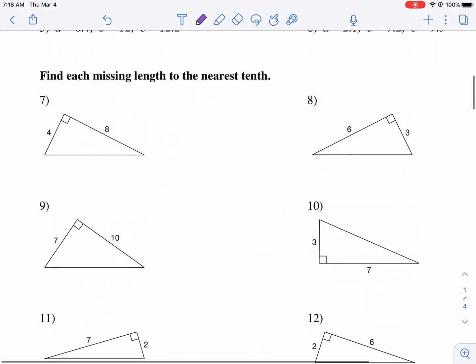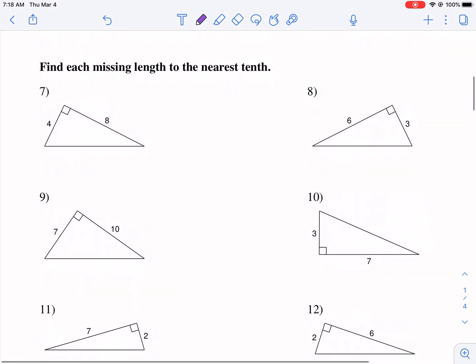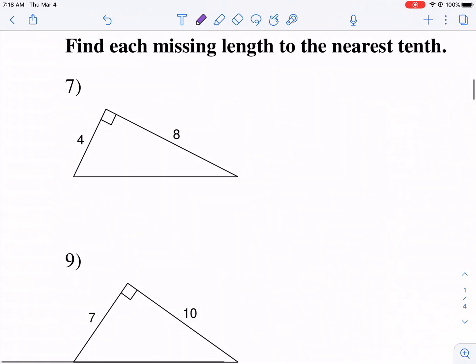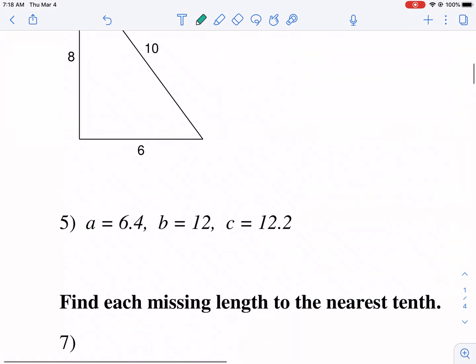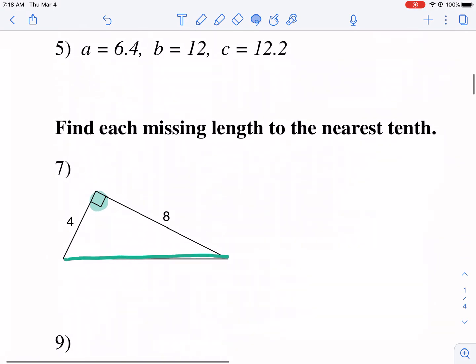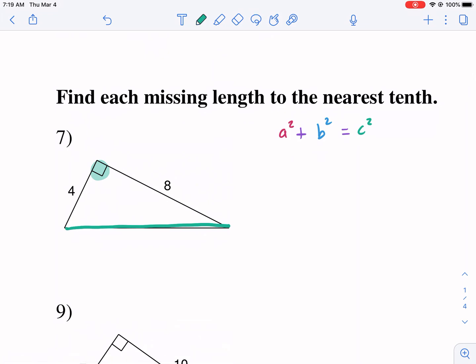Now find each missing length to the nearest tenth. So now we're going to apply it even further, and we're going to try to find the missing side. Now with these ones, if you, you have to be told that it is a right triangle. So this one, we see a 90 degree angle. So the side opposite is going to be the hypotenuse. So we know this is a 90 degree angle.